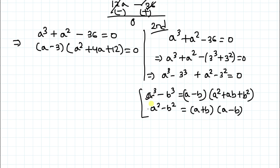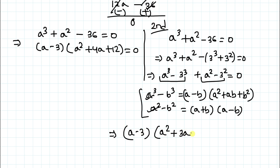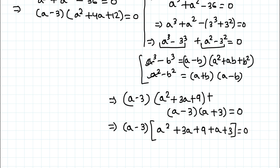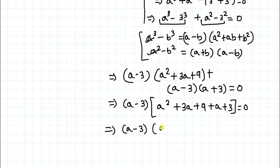We have (a − 3)(a² + 3a + 9) + (a − 3)(a + 3) = 0. Taking (a − 3) as a common factor gives (a − 3)(a² + 3a + 9 + a + 3) = 0, which simplifies to (a − 3)(a² + 4a + 12) = 0. Both methods yield exactly the same factors.